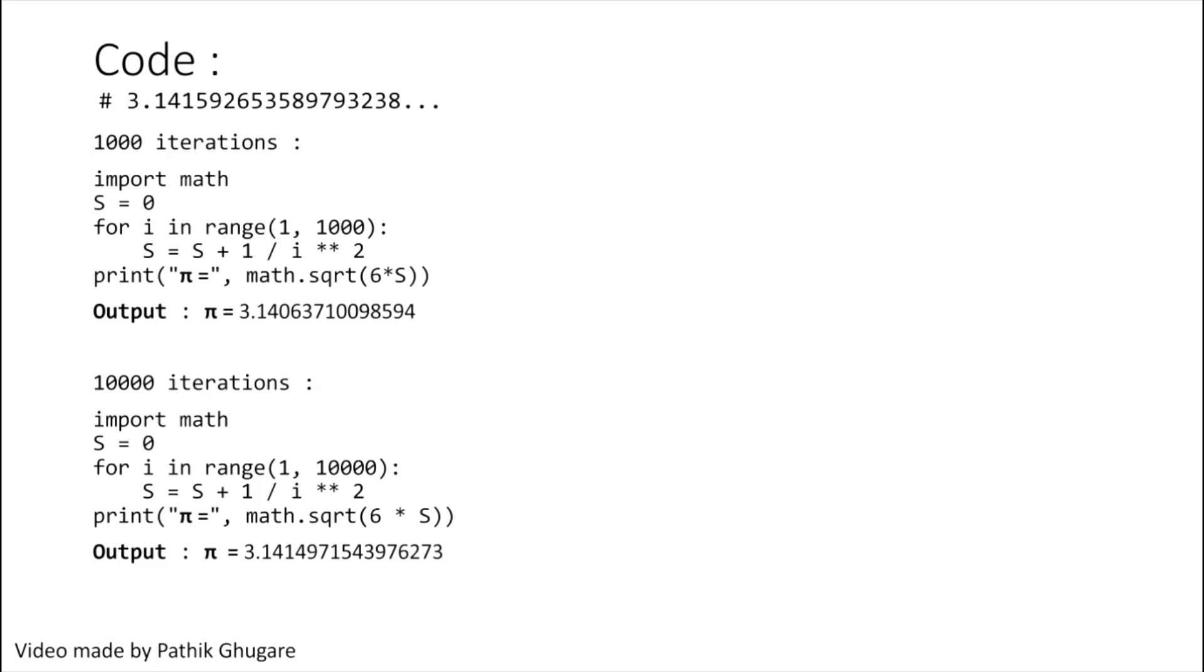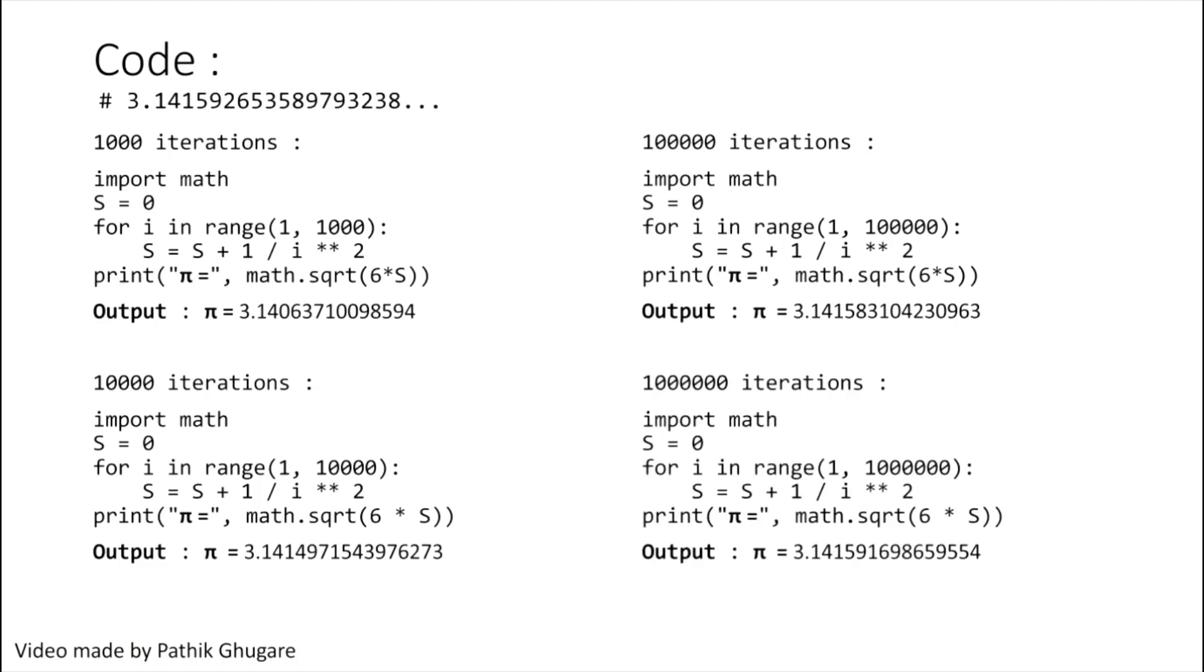So we are getting an approximate value to three decimal places. Now as you go on increasing iterations, you will get precise value to more and more decimal places. Just like here, for 10⁶ iterations we are getting an approximate value to five decimal places. But remember, don't go too high because your computer won't be able to handle those high iterations and your computer may get crashed.